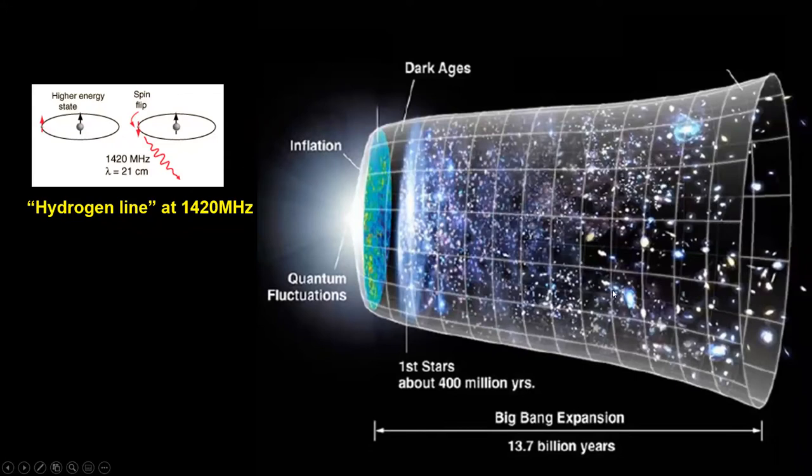When we look at the universe and the hydrogen lines, from the frequency of the hydrogen we know how far the object is and how old it is. The lower the frequency, the farther away we look in space.